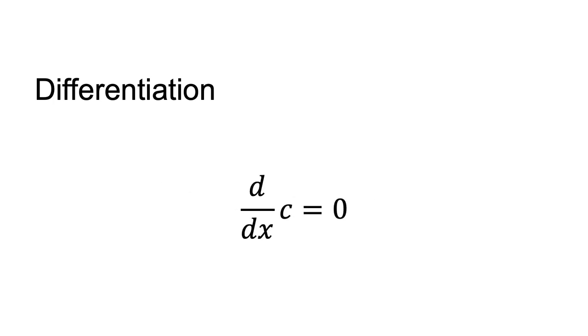There are several simple rules to differentiate a function. The rules relevant to these notes are as follows. The derivative of a constant is zero: d/dx c equals zero.